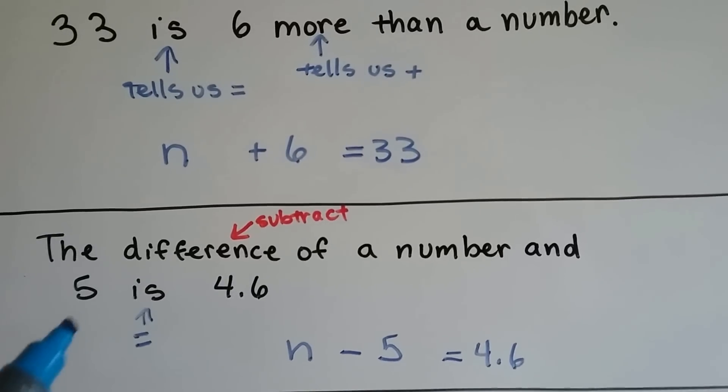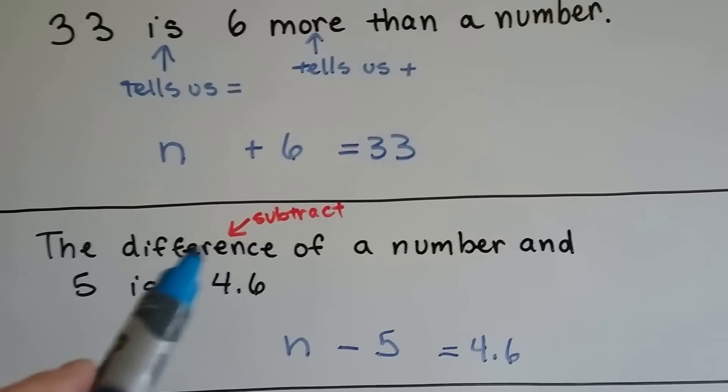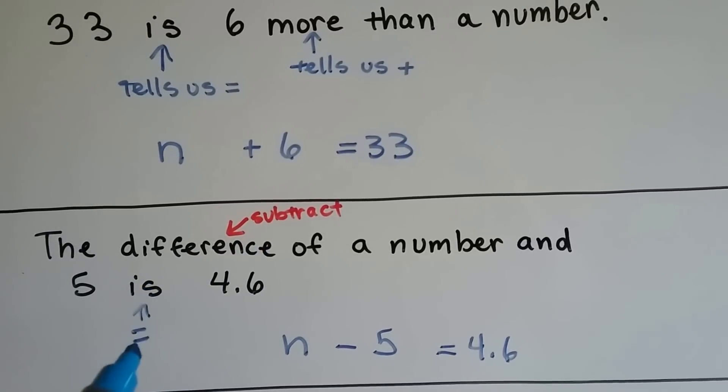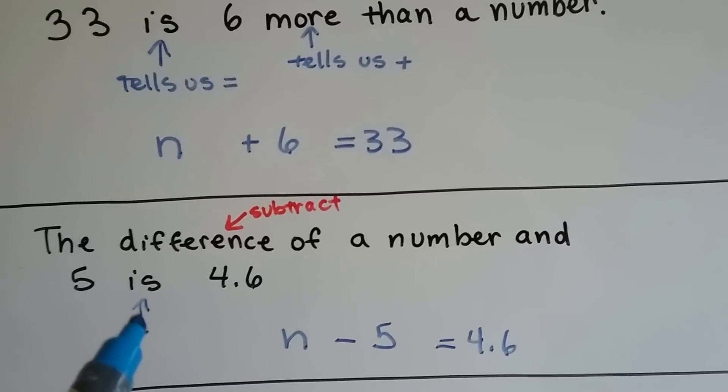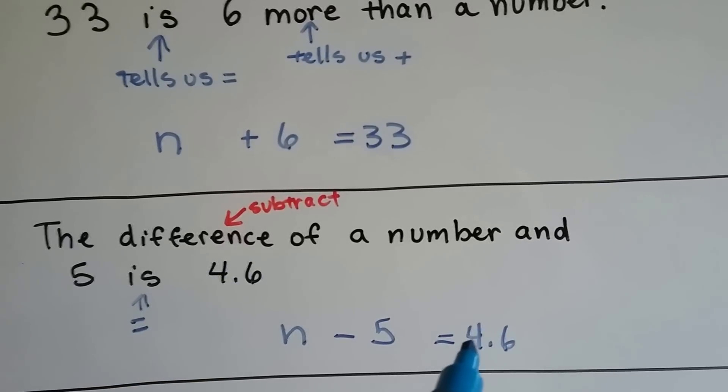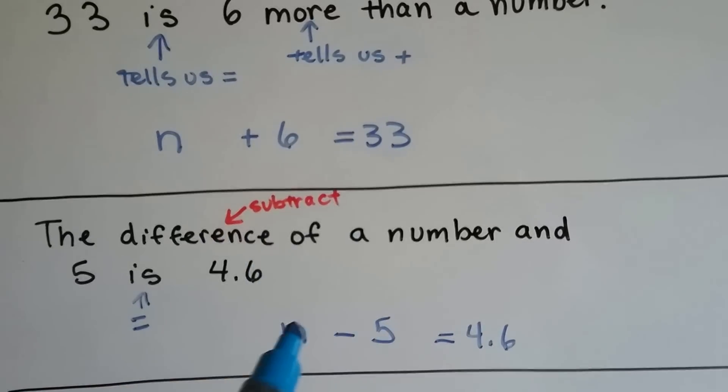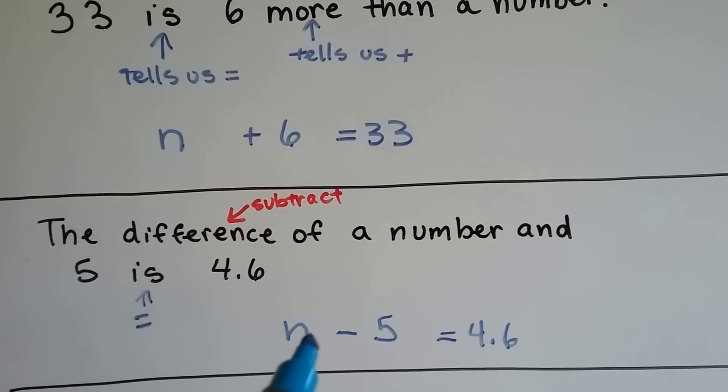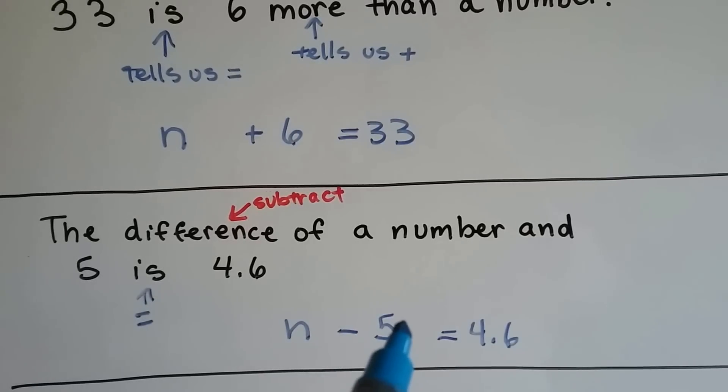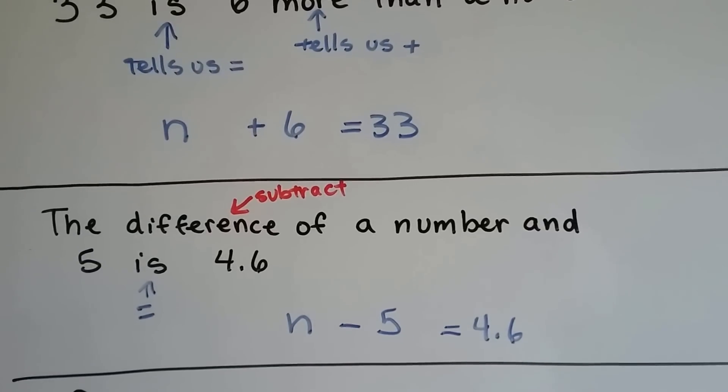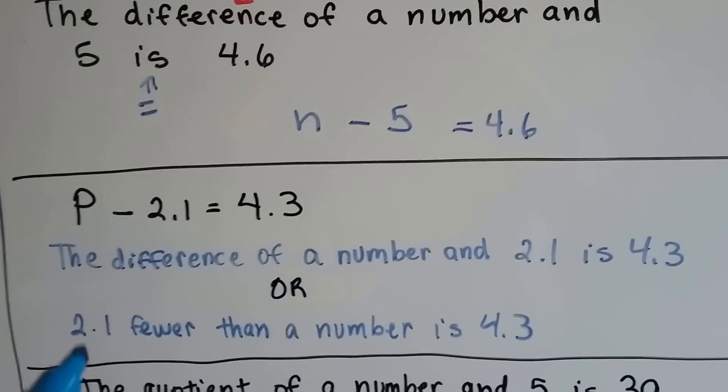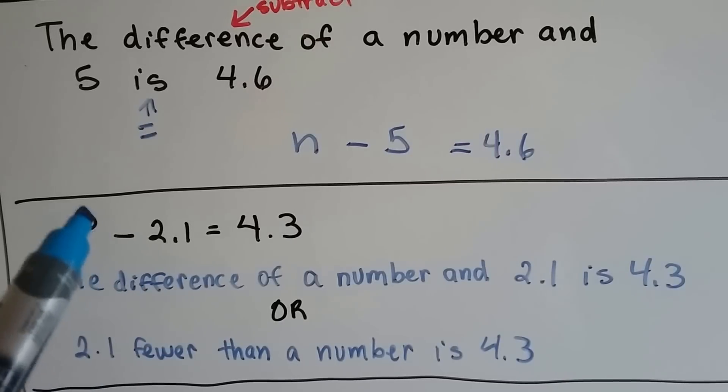The difference of a number and 5 is 4.6. Difference tells us to subtract, is tells us an equal sign. So, we know it's going to be equals 4.6. Difference of a number and 5, so we have N minus 5. The difference, so now we have an equation.